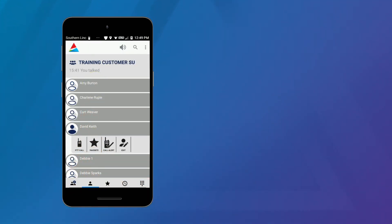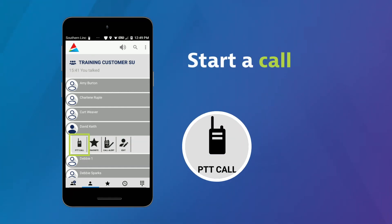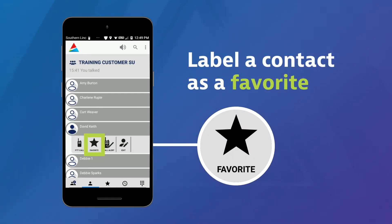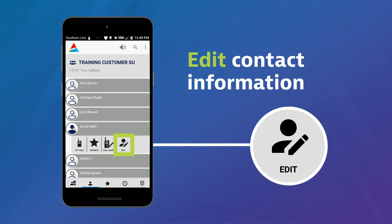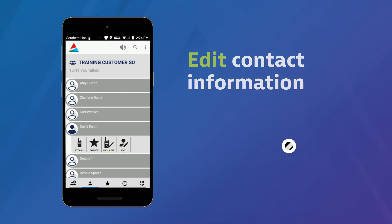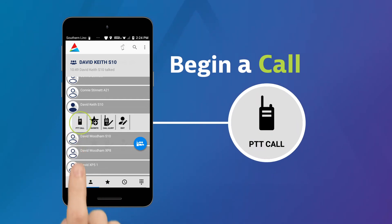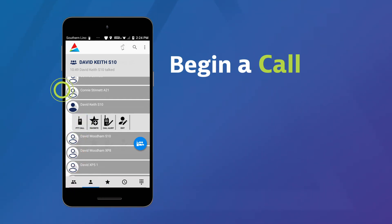After selecting a contact, a sub-navigation bar will appear. You can start a call, label a contact as a favorite, send a PTT call request alert, or edit contact information. To begin a call, touch the PTT call icon or press the PTT button on the side of your phone.